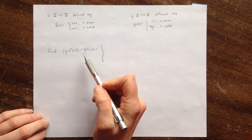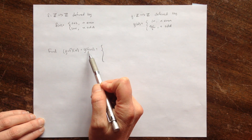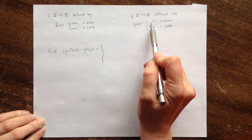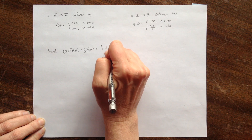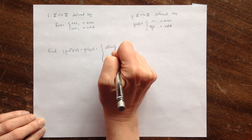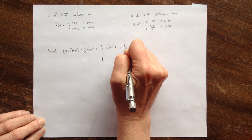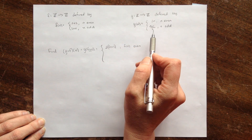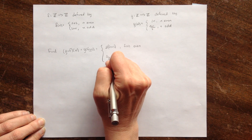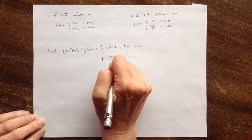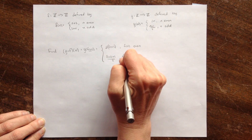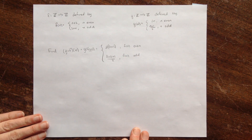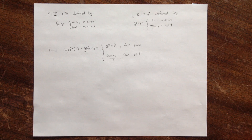So I'm looking at g. When you plug f of n into g, you're going to get two times whatever you're plugging in. So I'm plugging in f of n — you're going to get two times f of n when f of n is even. And when f of n is odd, you're going to get f of n plus 1 over 2, if f of n is odd. So I've just done exactly what that function g tells me to do.